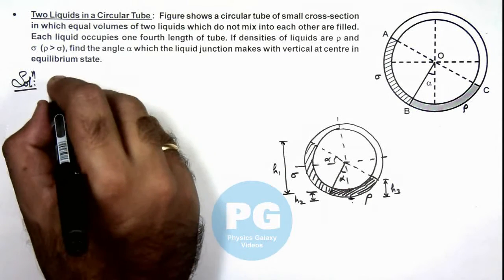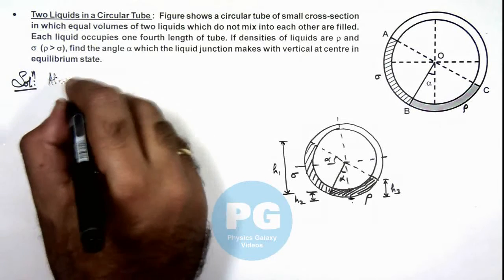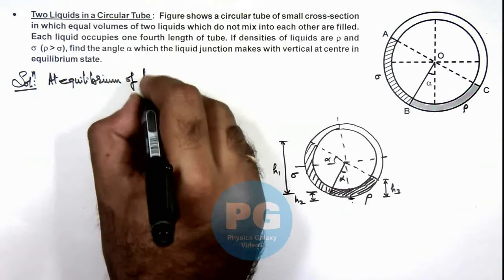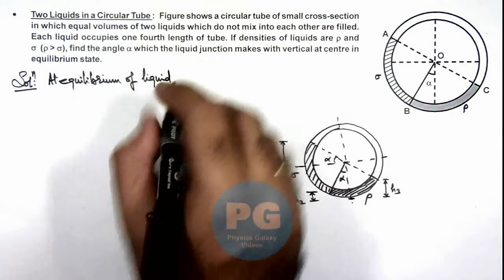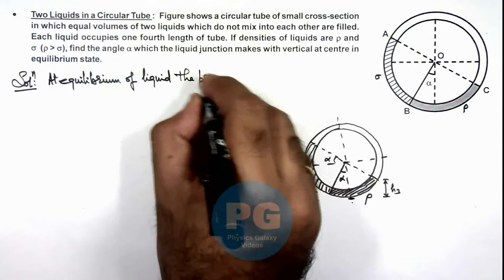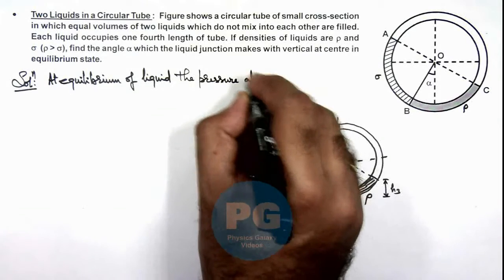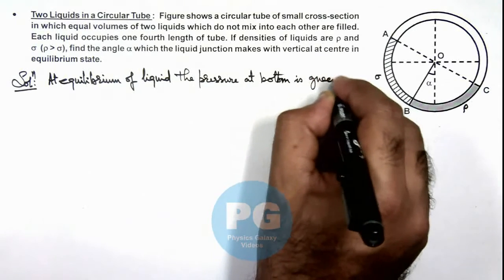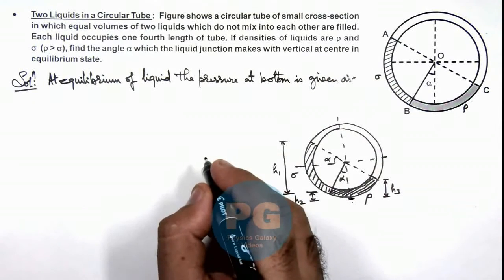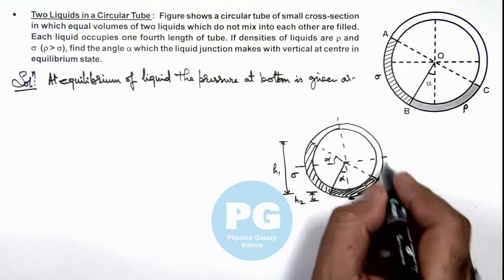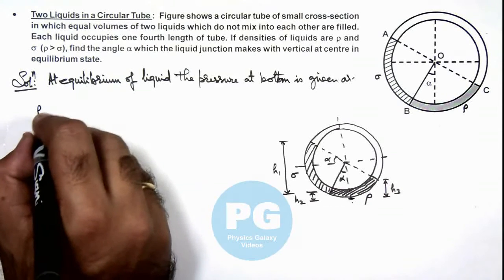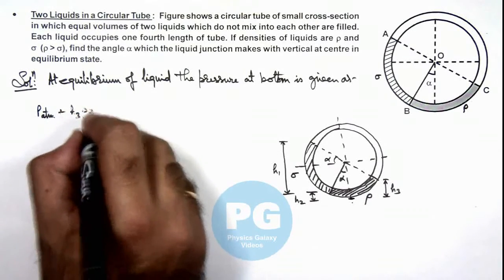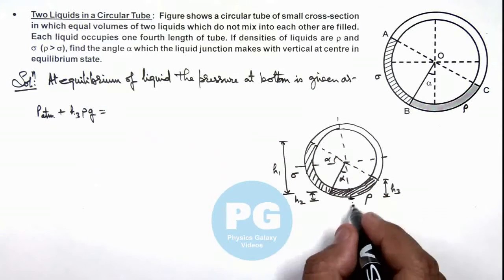The pressure at bottom is given as: here if we calculate the pressure at bottom, then from right side it can be given as P_atmospheric plus, this is h₃ ρg, and the same must be if we calculate the pressure from left side.